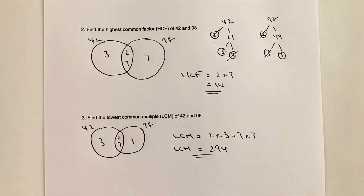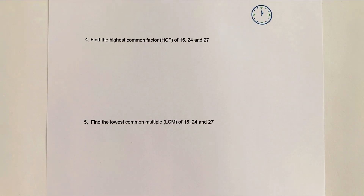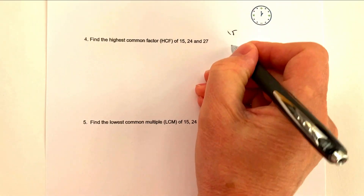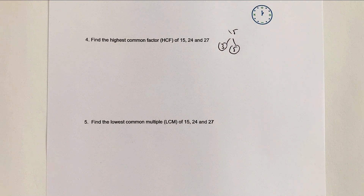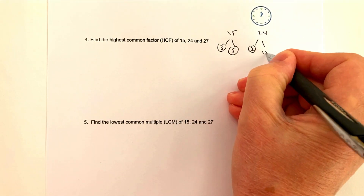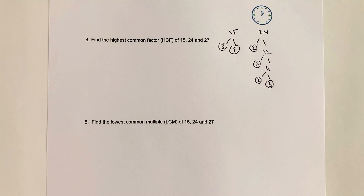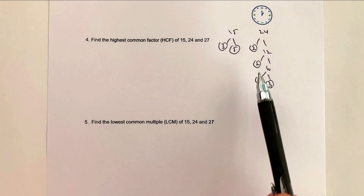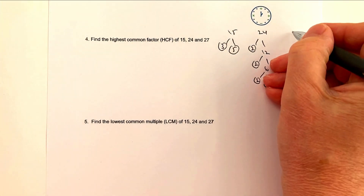Now let's look at three numbers and find the HCF and LCM using the same principle. We need factor trees for 15, 24, and 27. For 15: 3 × 5 — both prime. For 24: starting with 2 gives 12, then 2 gives 6, then 2 gives 3 — so 24 = 2 × 2 × 2 × 3. Check: 2 × 2 = 4, × 2 = 8, × 3 = 24. Correct.